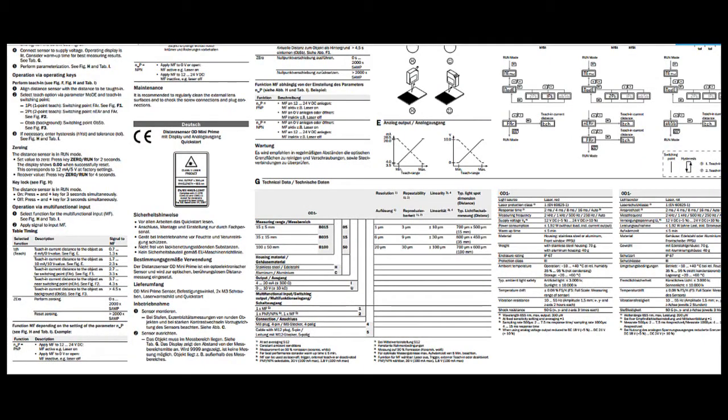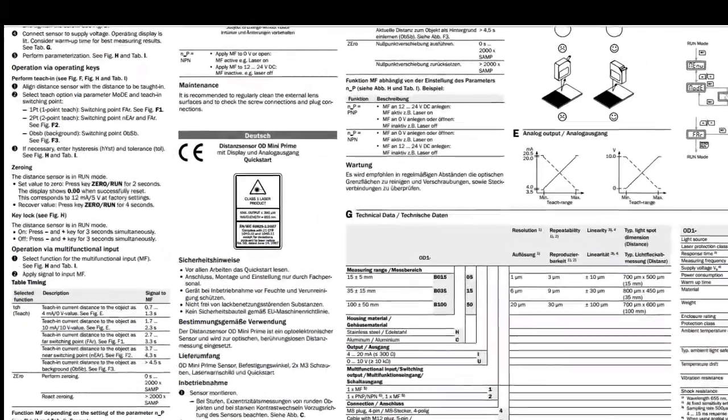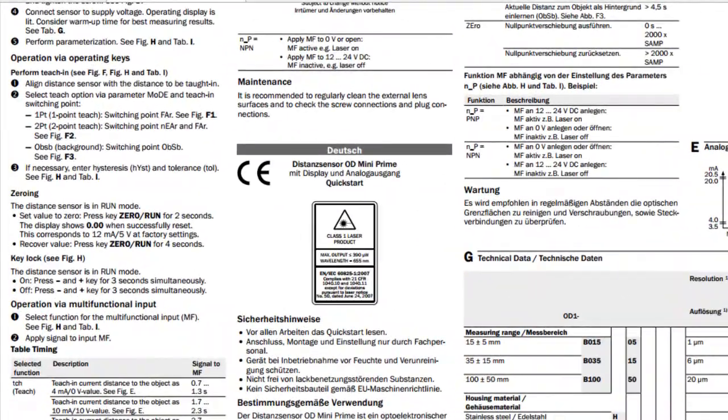There are three main ways to set up or parameterize an OD Mini. The first and most simple method that we'll talk about in this video to get it up and running is just using the keypad. Using the keypad, the display, and the buttons. And that is going to be called just programming, performing a teach-in using the keys.